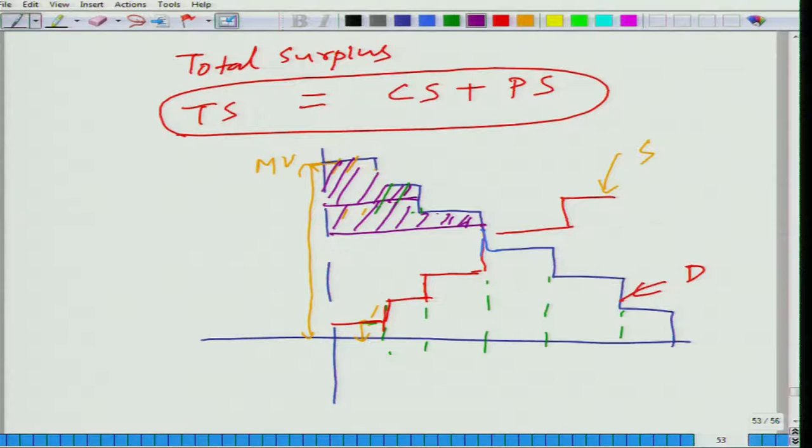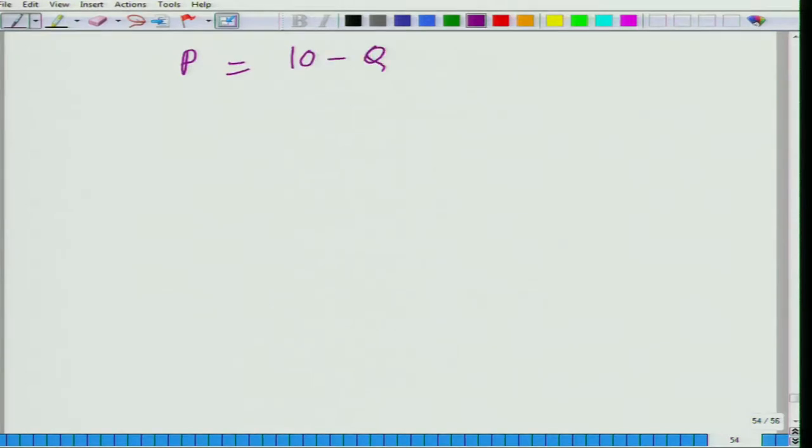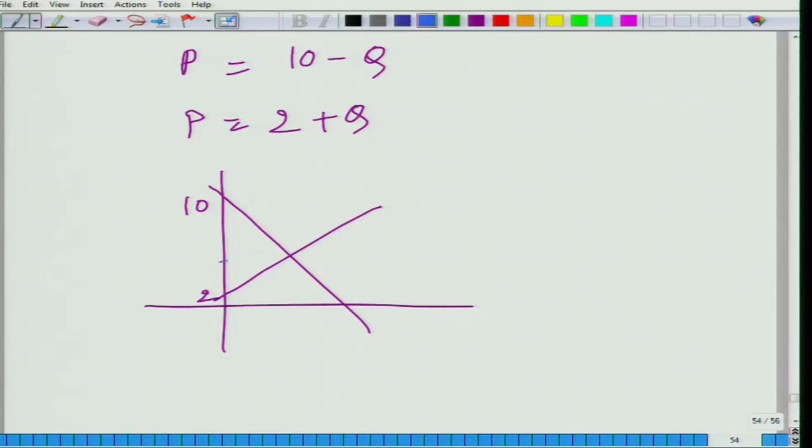Now, let us take an example. So let us take an example where we will calculate the total surplus. So let us say here we have, by looking at the equation can you tell me whether it is demand function or supply function? Demand. If you solve it, by now you should be able to solve it quickly. How much is the equilibrium price? Six. How can we get the equilibrium price? By equating these two equations, we will get the Q star.